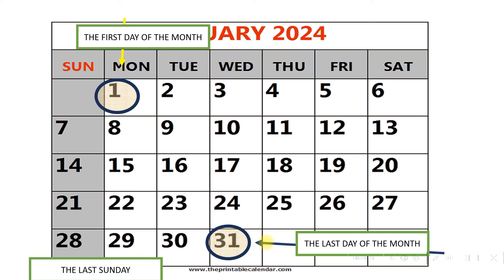Next question: what is the last Sunday? Suppose a guest is coming and says 'I will come on the last Sunday' — you immediately want to know which date. So go to Sunday and check. First Sunday is 7, second Sunday is 14, third Sunday is 21, and the last Sunday is 28.